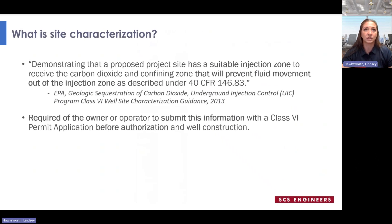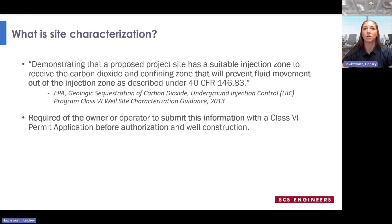Moving on to site characterization, let's first discuss what this means for a Class 6 permit. As described in EPA's guidance, site characterization demonstrates that a proposed project site has a suitable injection zone to receive the carbon dioxide and a confining zone that will prevent fluid movement out of the injection zone. Information gathered for site characterization is also required to be submitted with a Class 6 permit application before authorization of well construction and operation. SCS has already prepared a webinar within this series — Casey Gerber's feasibility assessment webinar — that can help you determine site suitability.